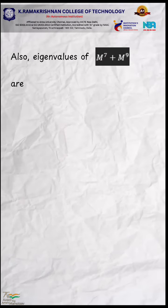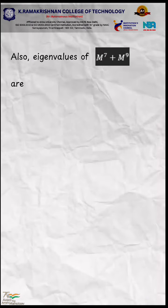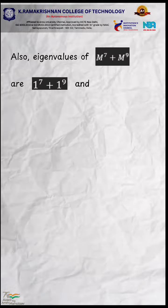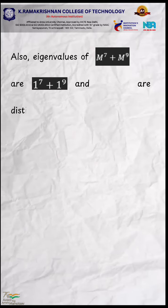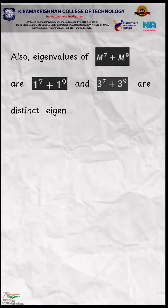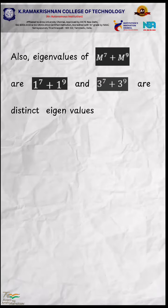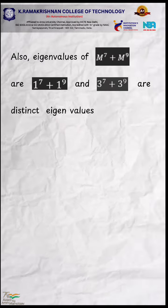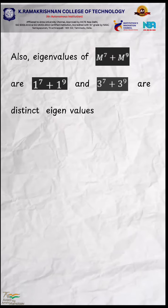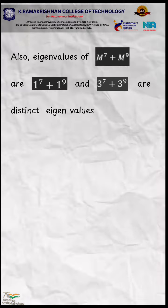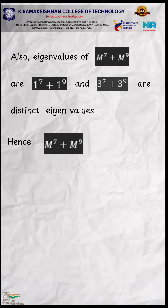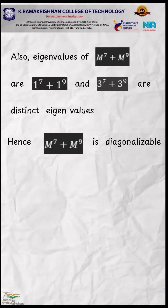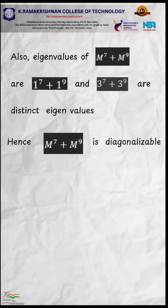The eigenvalues of M power 7 plus M power 9 are 1 power 7 plus 1 power 9, and 3 power 7 plus 3 power 9. These are distinct eigenvalues, hence M power 7 plus M power 9 is diagonalizable. Thank you.